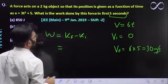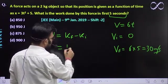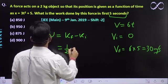Work done is nothing but increase in kinetic energy: K final minus K initial. We need to find it after 5 seconds. Final kinetic energy will be half m, mass is 2, final velocity 30 whole square.